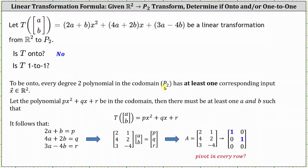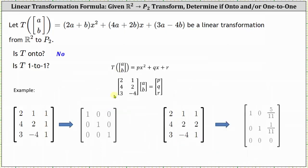For example, some polynomials in P2 have no corresponding input vector x in R2. If we select the polynomial where P, Q, and R are all equal to one, the corresponding augmented matrix shown in the lower left corner, when written in reduced row echelon form, has a last row of [0, 0, 1], making the system inconsistent — so no vector x in R2 corresponds to that polynomial. By contrast, when P = 1, Q = 2, R = 1, the system has a solution, indicating a corresponding vector x does exist.